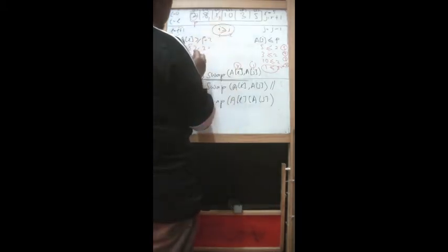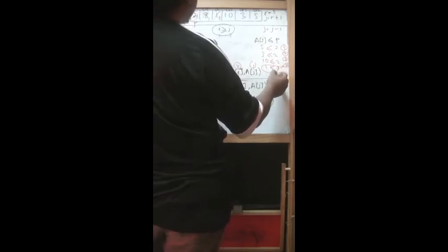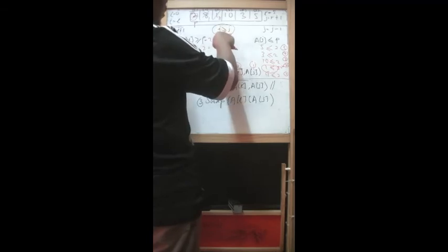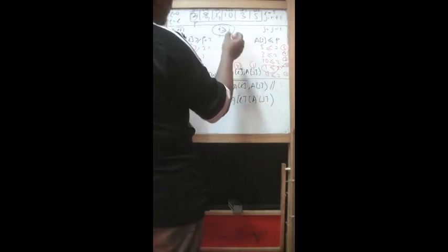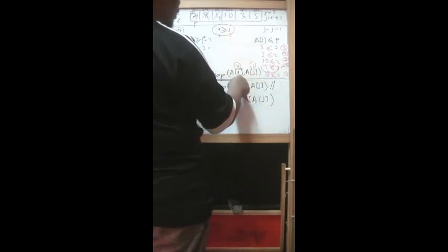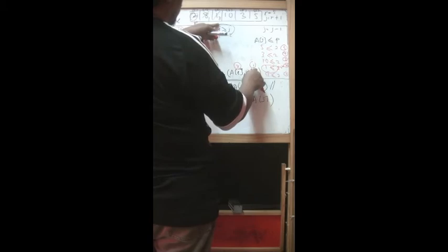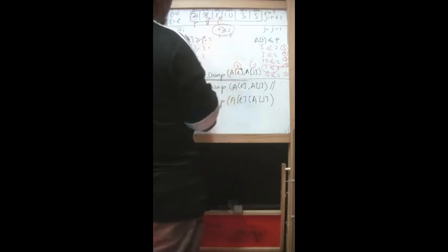Continue the loop: I becomes 2, and A[2] is 8, which is greater than 2 — true. Now check J: J decrements by 1, and the new A[J] is less than 2, so true. But also I is now 2 and J is 1, meaning I is greater than J. The crossover condition is met, so we exit the loop and proceed to the next swap.